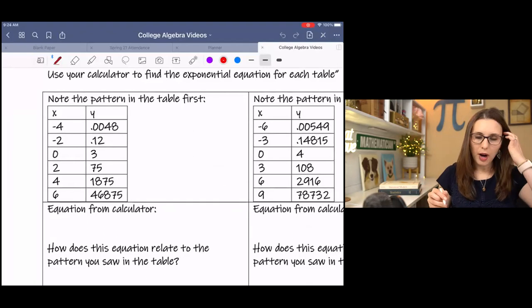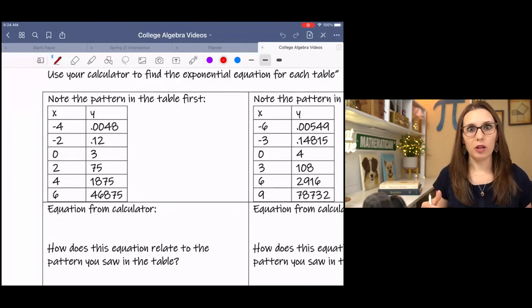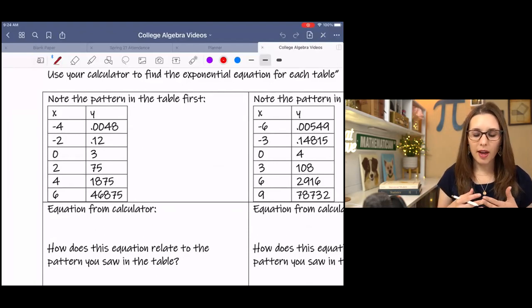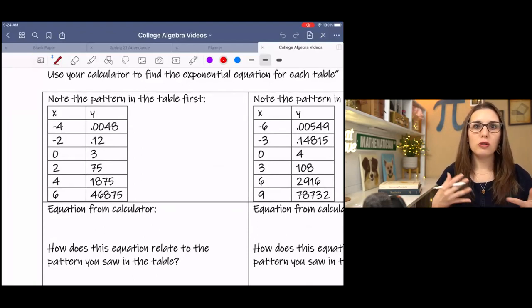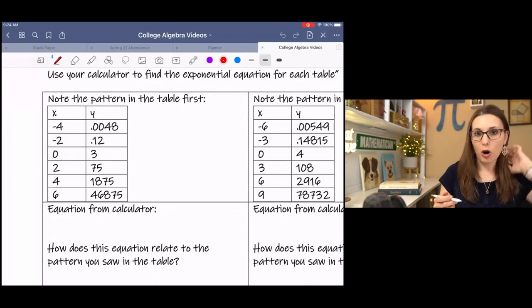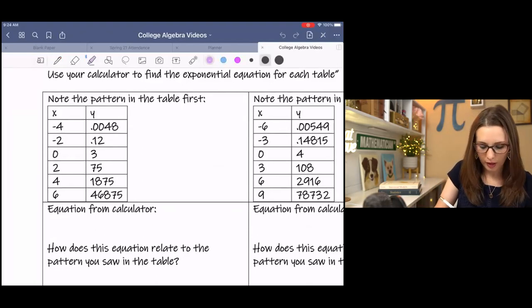We're going to practice doing both a little bit. So in the first example, I have a table of values, and we know that the initial value, the y-intercept, is part of our equation.